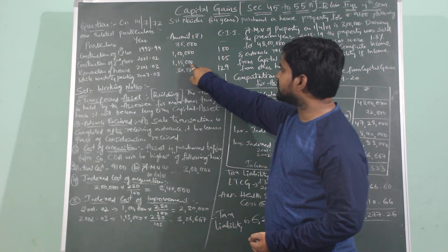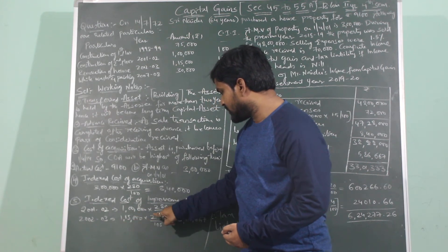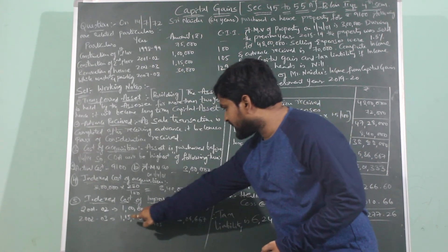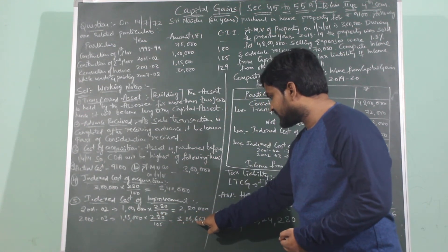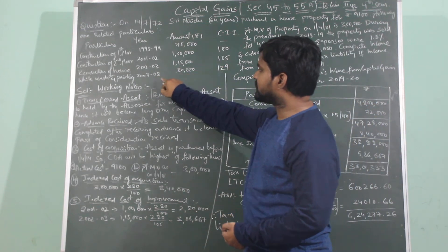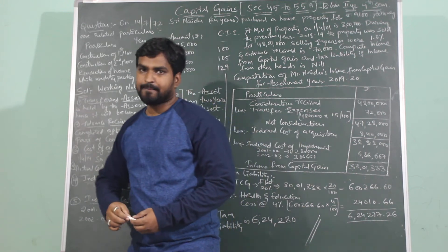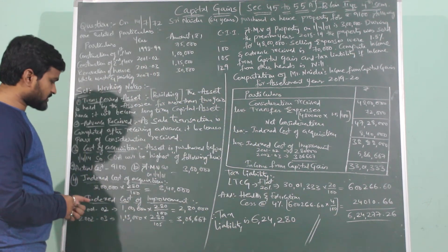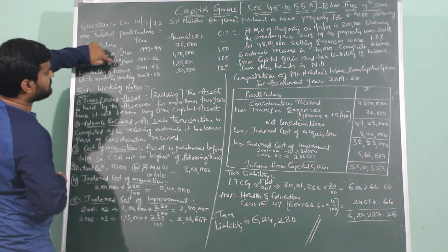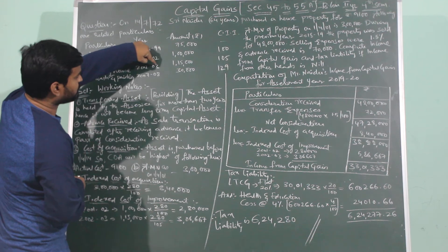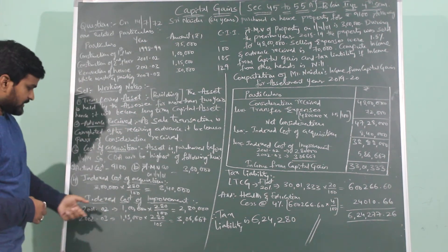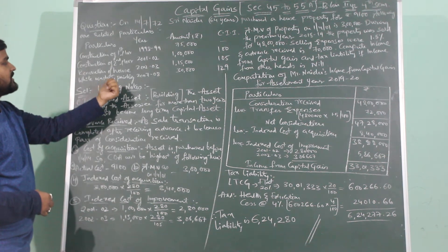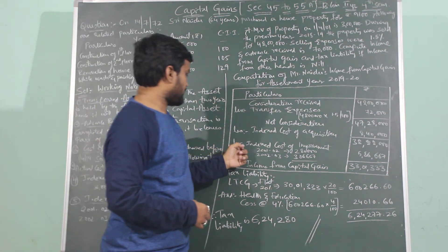For 2002-2003: Rs. 1 lakh 15,000 × 280 ÷ 105 = Rs. 3 lakhs 6,667. For 2007-2008: whitewash and painting of Rs. 30,000 — these are considered revenue expenditure, hence not considered. So among the four expenditures, only construction of second floor (2001-2002) and renovation of house (2002-2003) are allowed as reduction. The 1998-99 expenditure is ignored as it is before 2001, and whitewash/painting is revenue in nature.